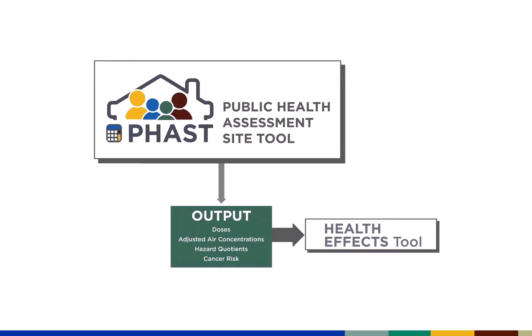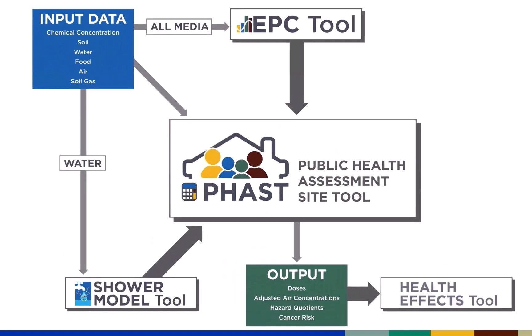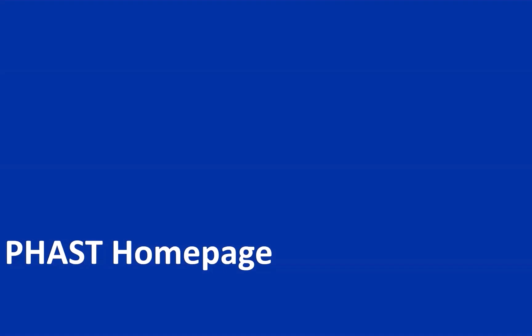FAST produces outputs such as doses, adjusted air concentrations, hazard quotients, and cancer risk. The health effects tool, which is not a separate program but is actually part of FAST, generates health effects charts using the site-specific doses and adjusted air concentrations generated in FAST. There are separate training videos on how to use each of these FAST-related tools. Because this training video's focus is FAST, let's take a look at the FAST homepage.